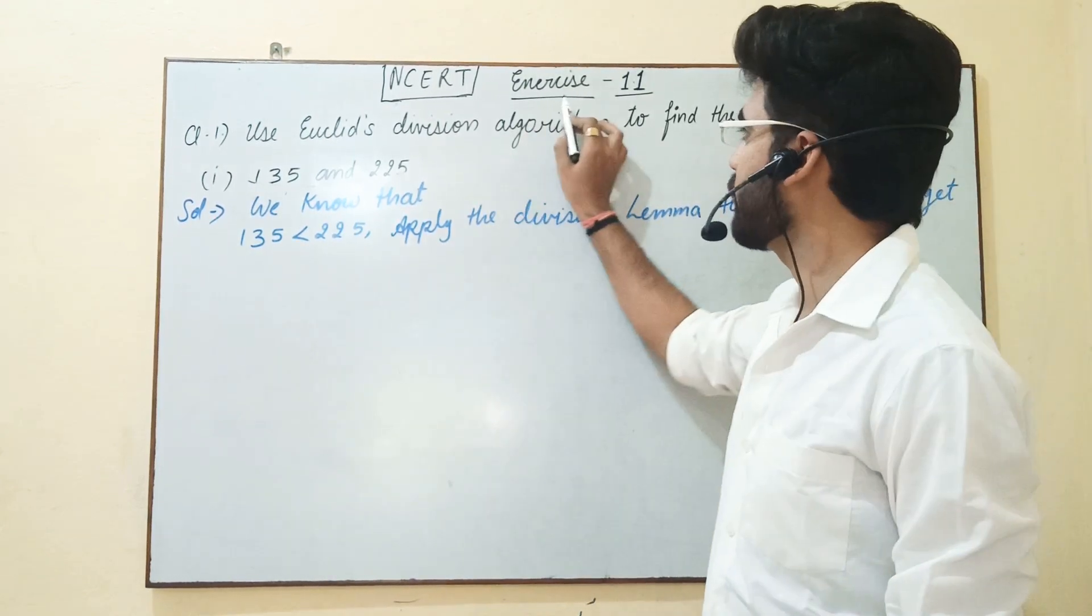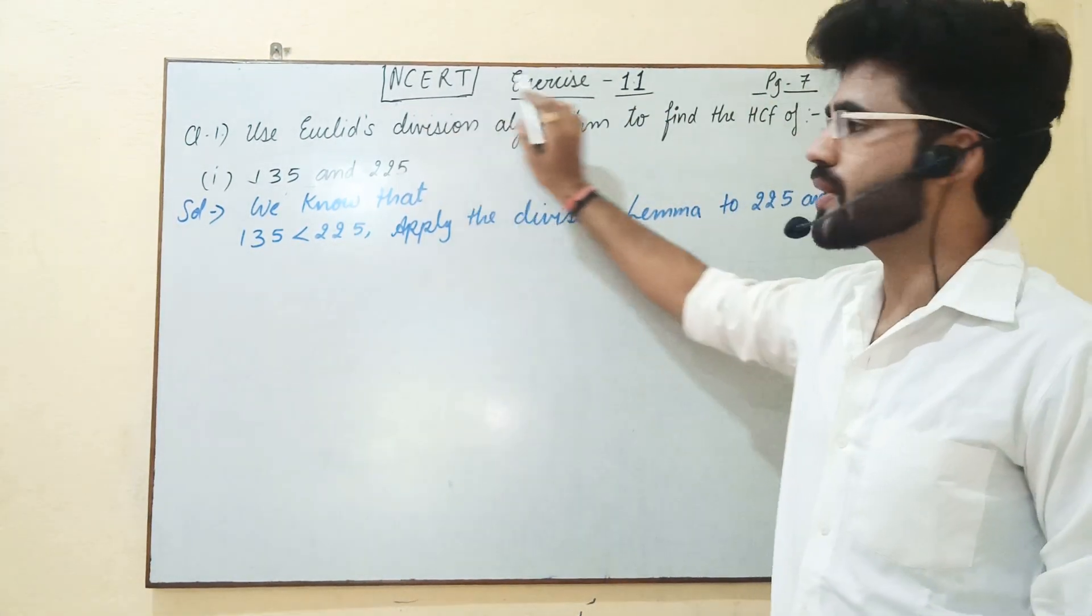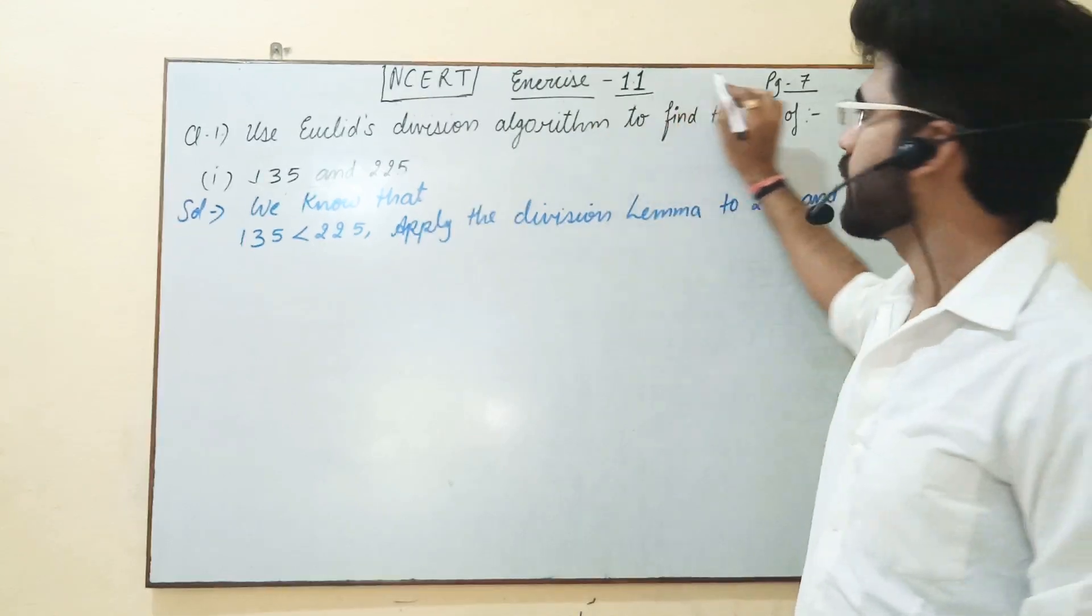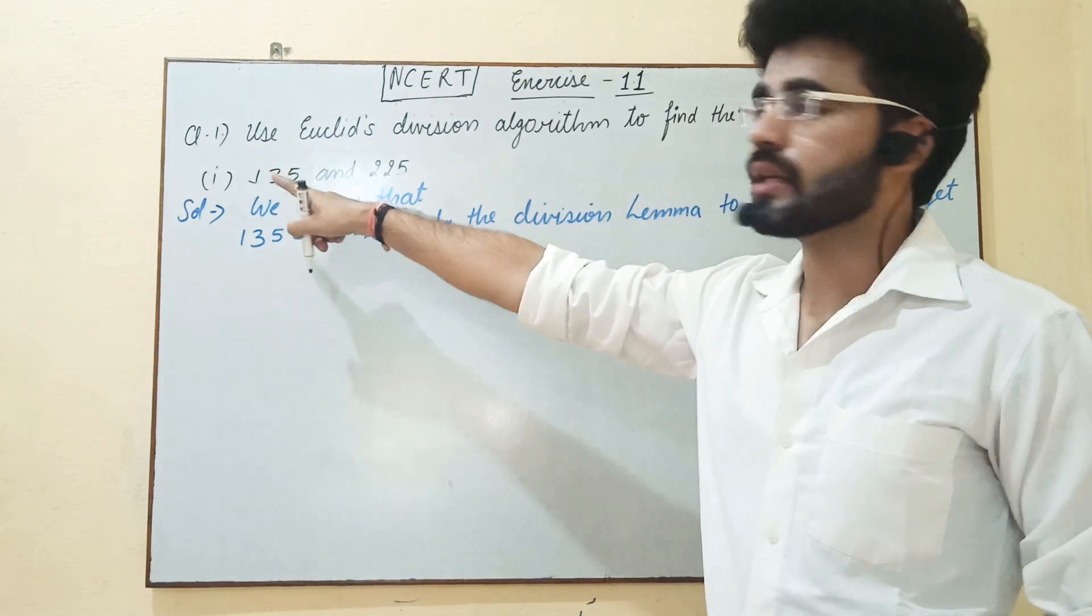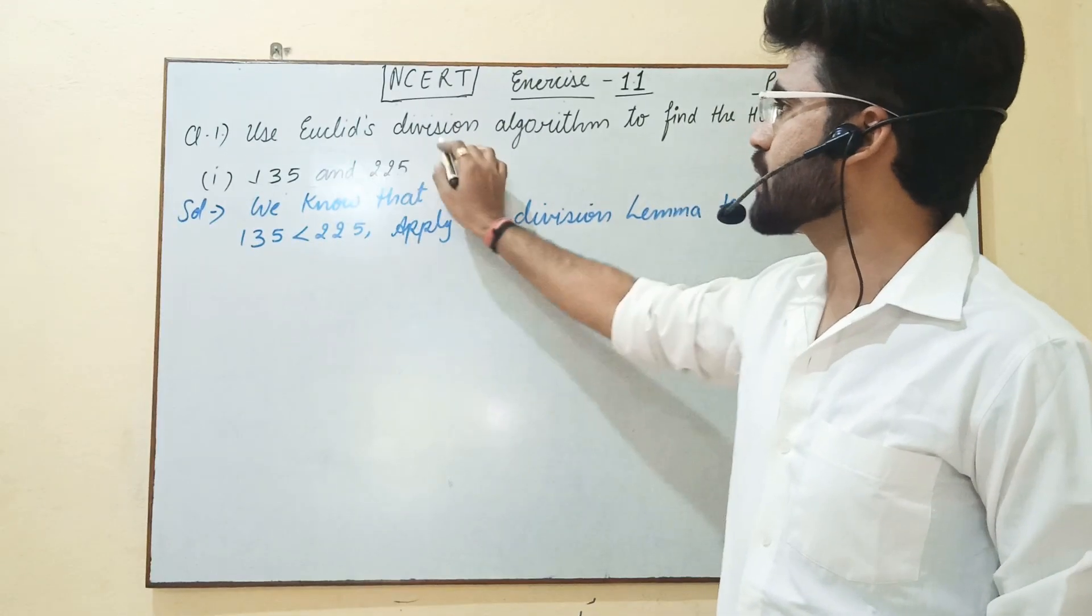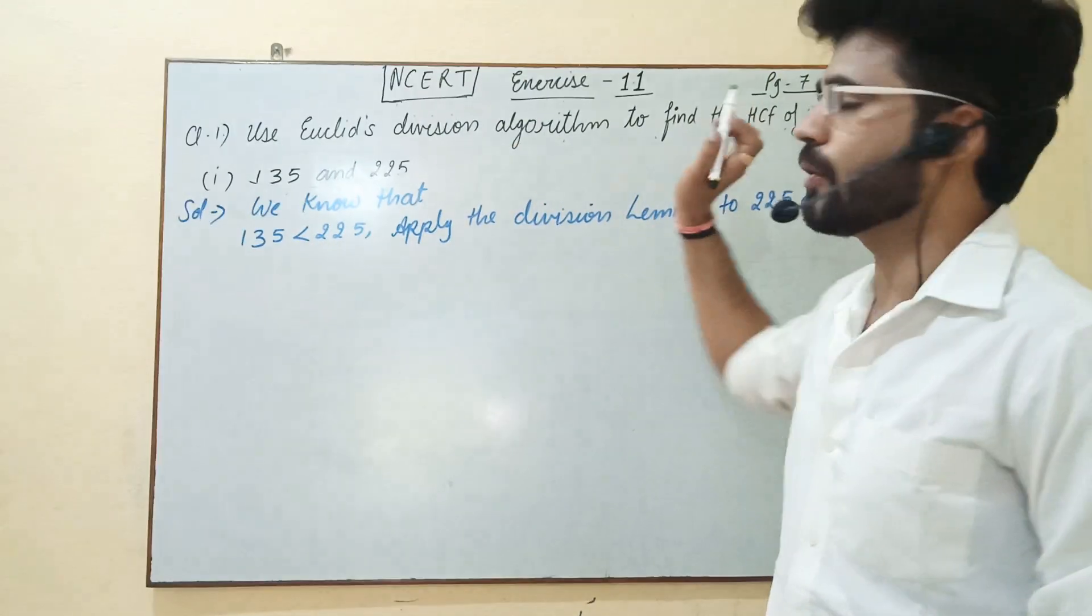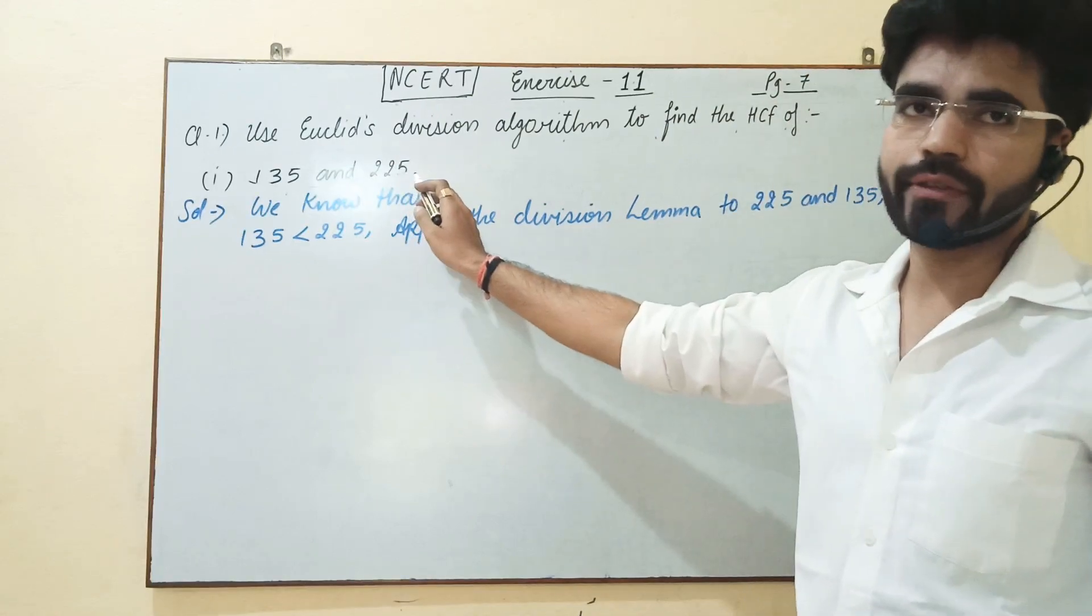We have to start Exercise number 1.1 in NCERT book. There is Exercise 1.1 on page number 7. In this question, the first question will be given: Use Euclid's division algorithm to find the HCF of 135 and 225.